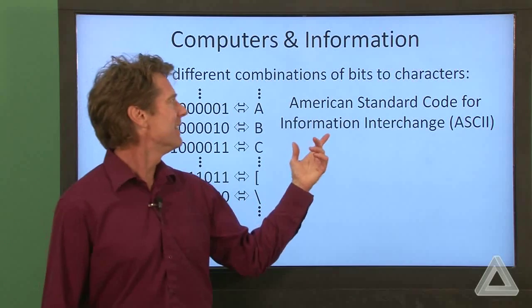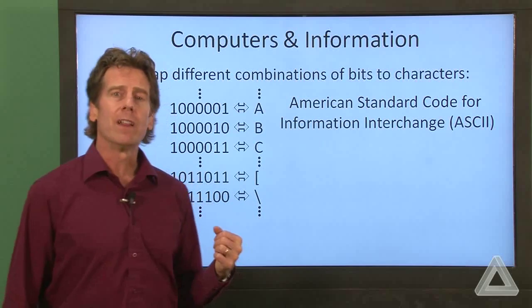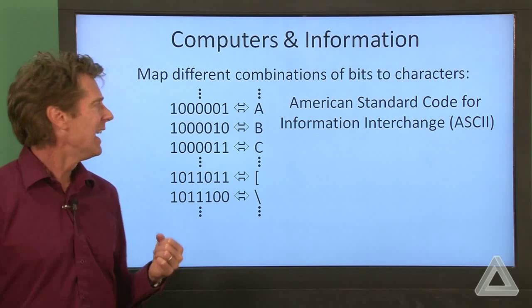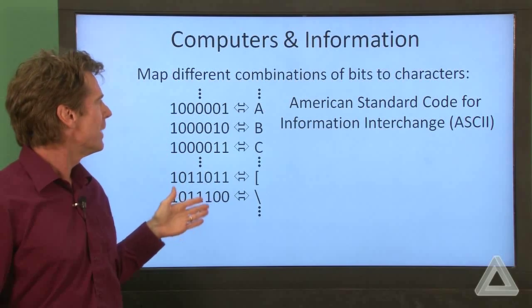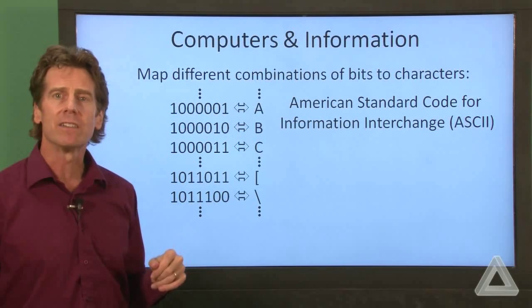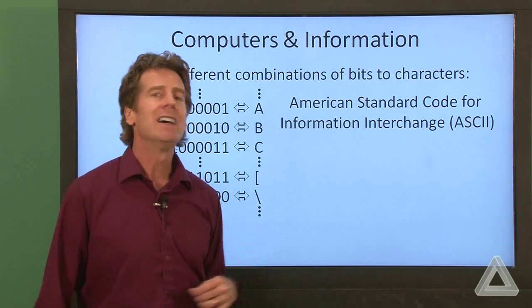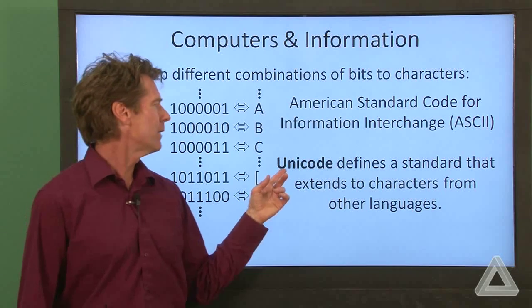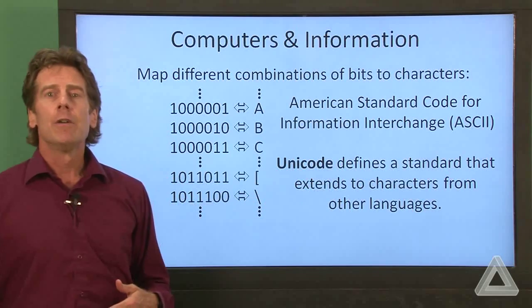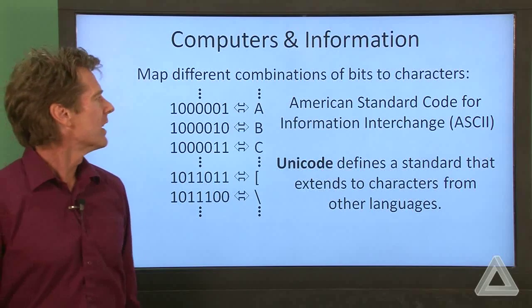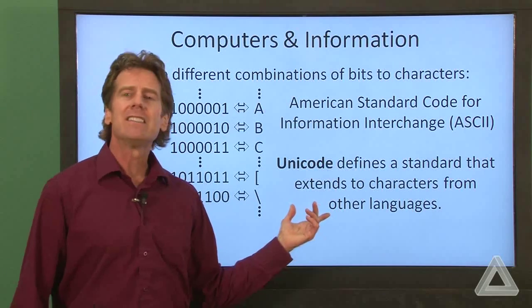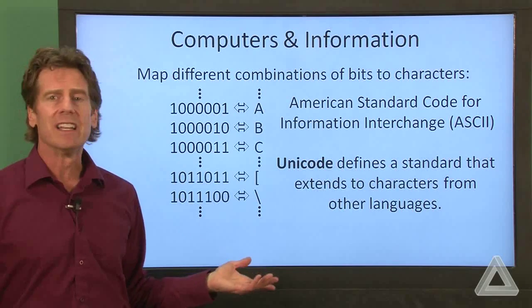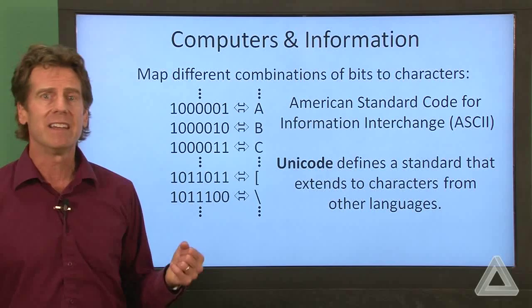And back in the 1960s, a standard was developed. It was known as the American Standard Code for Information Interchange, or ASCII. And it defines this mapping of bits to characters and became very widely used. It became the standard. And since then, another standard has been developed. It's known as Unicode that provides a much larger character set that extends to characters from other languages, whether that's Chinese, Cyrillic, Thai, and so on.